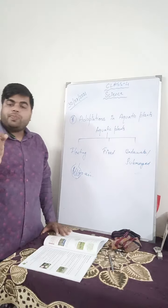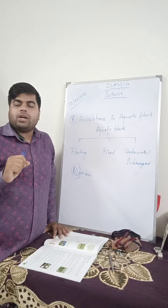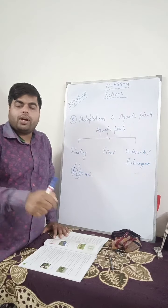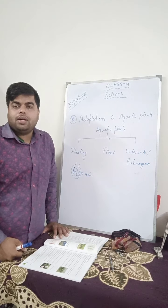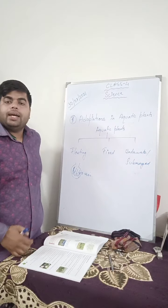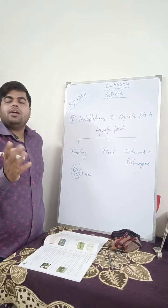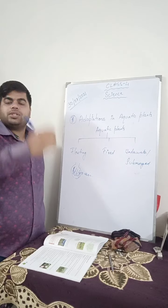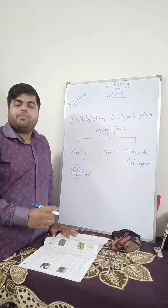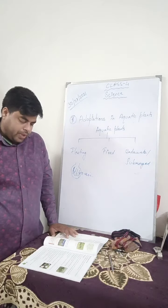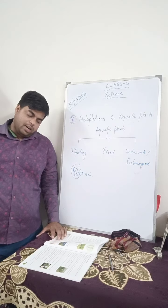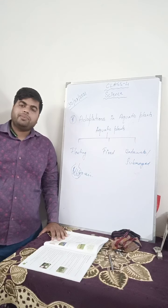Fixed plants are those aquatic plants in which the roots are attached to the soil inside the water. They do not move from one place to another. They can bend in any direction because they have a very long, flexible stem, but they do not move from one place to another. Fixed plants have roots that are fixed at the bottom in the mud under water.